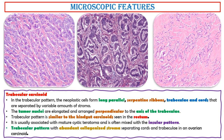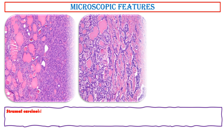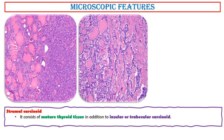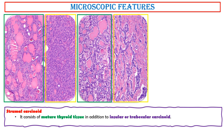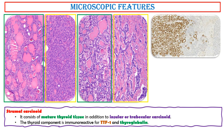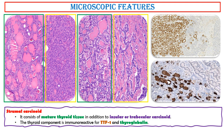This photo shows a trabecular pattern with abundant collagenized stroma separating cords and trabeculae in an ovarian carcinoid. Stromal carcinoid consists of mature thyroid tissue in addition to insular or trabecular carcinoid. The thyroid component is immunoreactive for TTF1 (nuclear staining) and thyroglobulin (cytoplasmic staining).